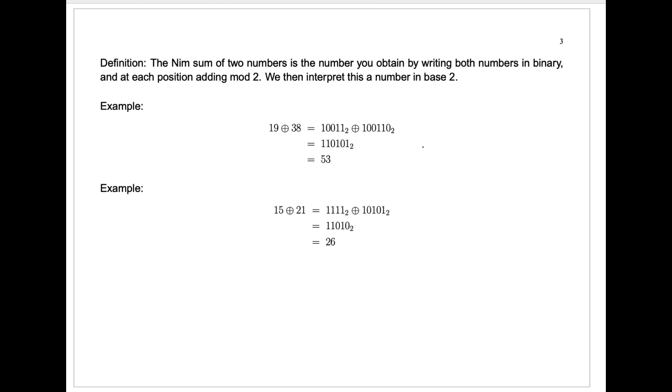The Nim sum is a type of sum for whole numbers 0, 1, 2, 3, etc. that tells you how to add them in a special way. In order to compute the Nim sum of two numbers, you first write the numbers in binary, base 2, and then in each position, you add the numbers mod 2, meaning you get a 0 if the sum of the numbers in that position is even, and you get a 1 if the sum is odd. We then interpret the result as a base 2 number.